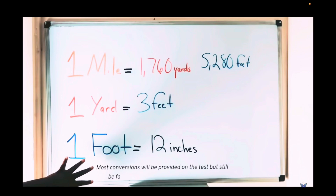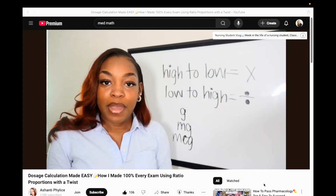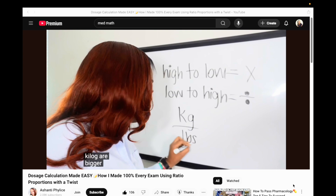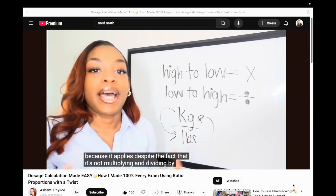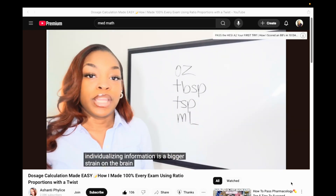Helpful conversion tips: when converting, for example, how many feet are in five miles — miles are larger than feet, so from high to low. A memory trick: when converting any metric outside of temperature, from high to low you multiply; from low to high you divide. Note: kilograms are larger than pounds. Remember these math tips not only for the HESI exam but also when you begin to study for med math or dosage calculations.